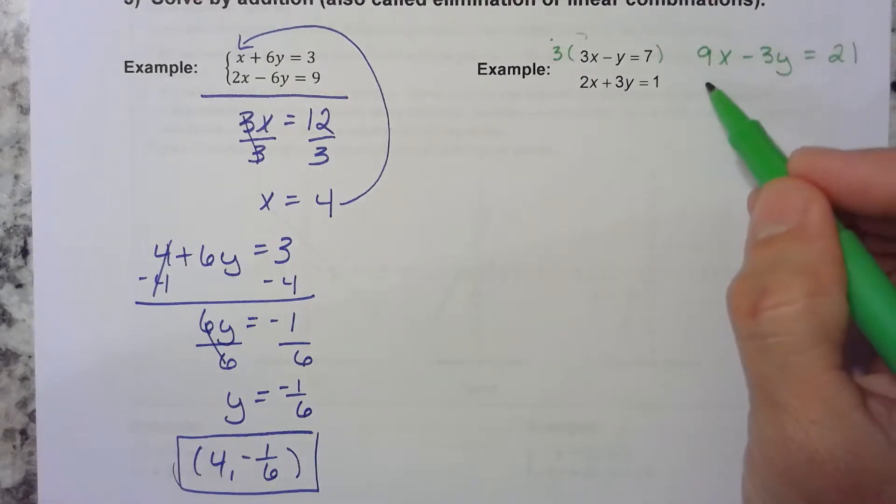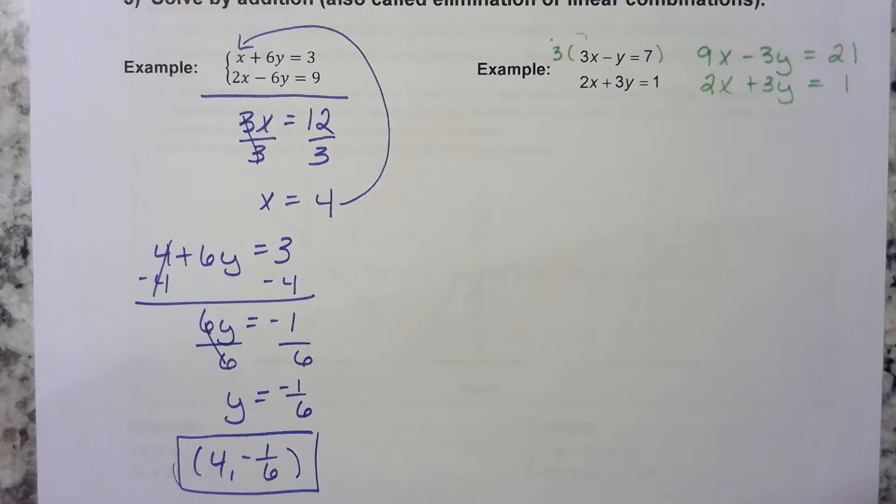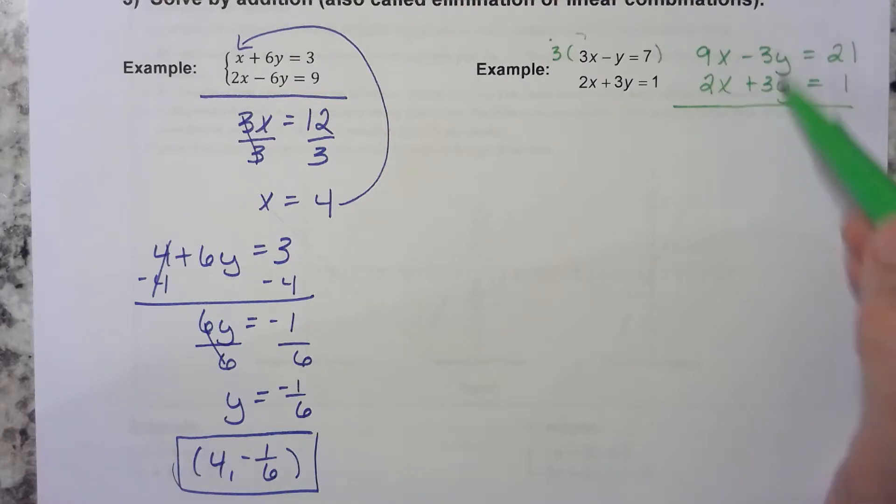Bring this one over. 2x plus 3y equals 1. Now does something nice happen? The y's go away, right? So 9x plus 2x is 11x. 21 plus 1 is 22. Divide both sides by 11. And we get x is equal to 2.